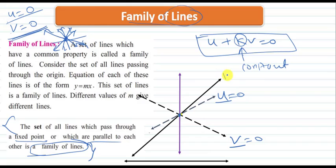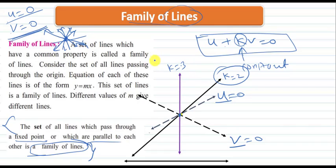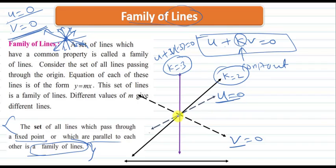Just remember this: here u equals 0 and v equals 0. For different values of k — where k is a constant — the lines will be different. For example, if k equals minus 3, the equation becomes u plus v times minus 3 equals 0, that is u minus 3v equals 0. Depending on the value of k, the lines will be different, but all lines will pass through the intersecting point of u and v. So the general equation of the family of lines is u plus kv, where u is one line and v is the second line.